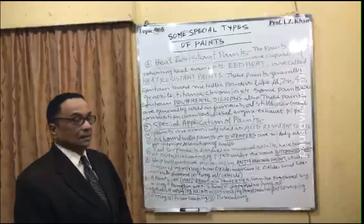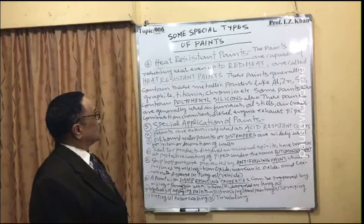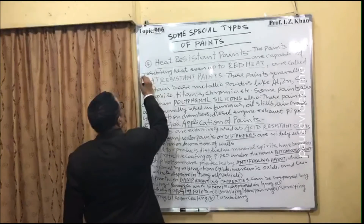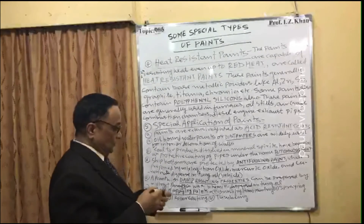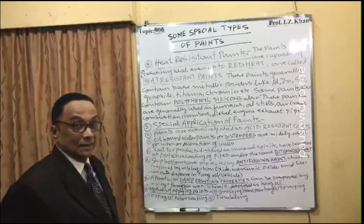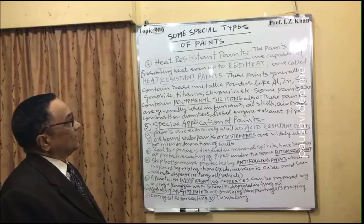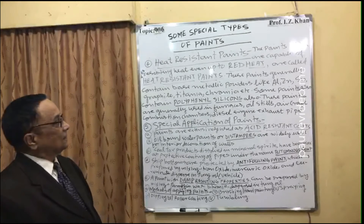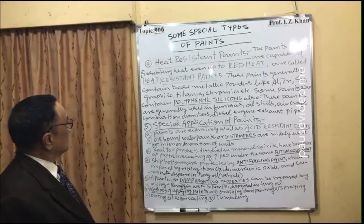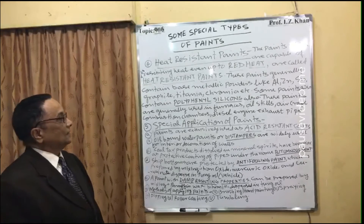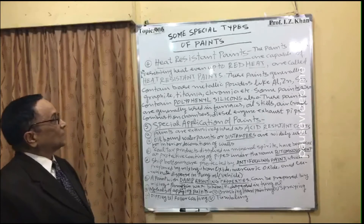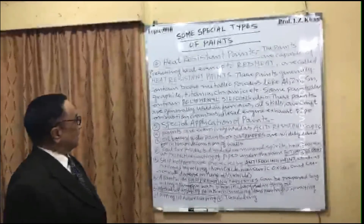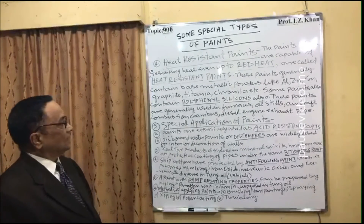The fourth type is heat resistant paints. These paints resist heat even up to red heat and generally contain base metallic powders such as aluminium powder, zinc powder, tin powder, graphite powder, titania powder, and chromium powder. Some paints also contain polyphenyl silicones.